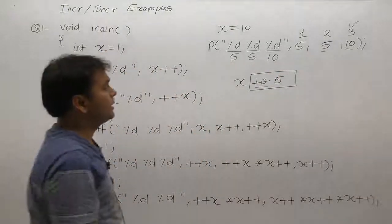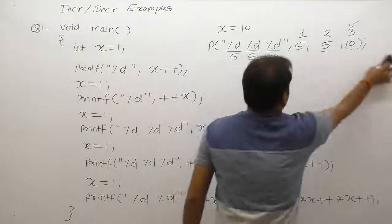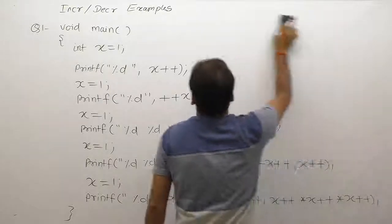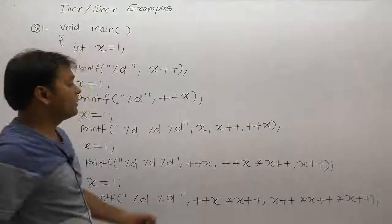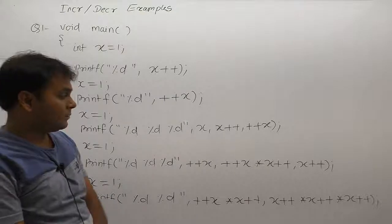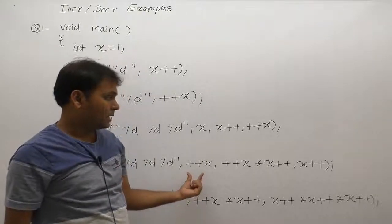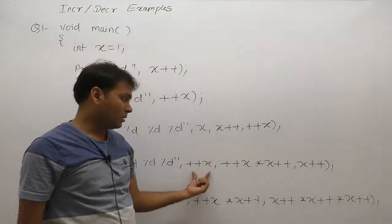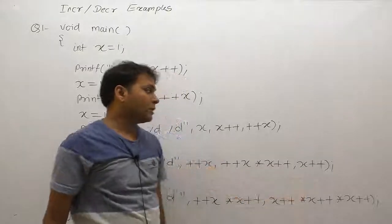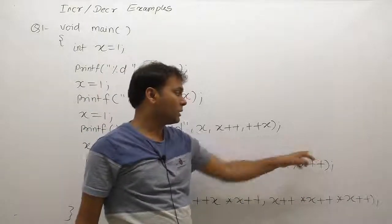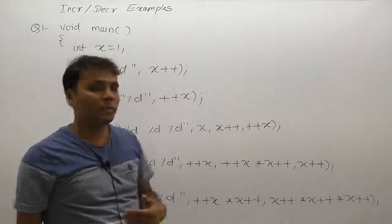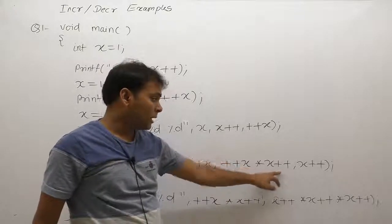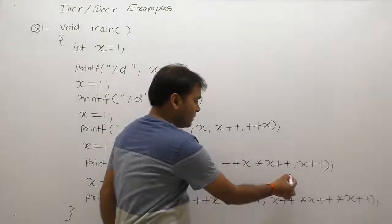The same behavior applies in examples involving increment operations inside printf functions. When there are multiple expressions separated by commas — expression 1, 2, and 3 — the third expression is solved first, then the second, then the first. What is meant by solving right to left? It does not mean solving the individual expression from right to left internally — that interpretation is incorrect.